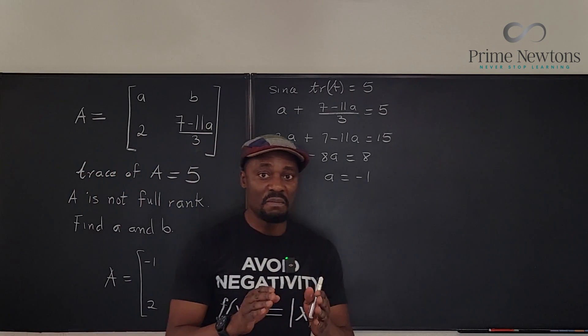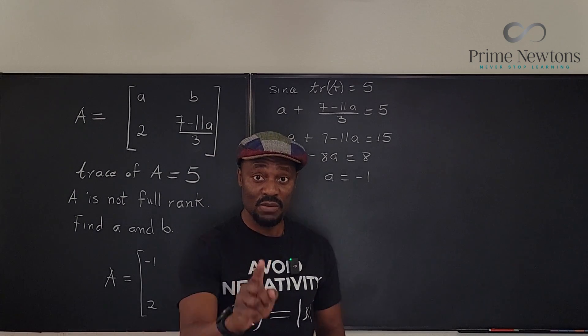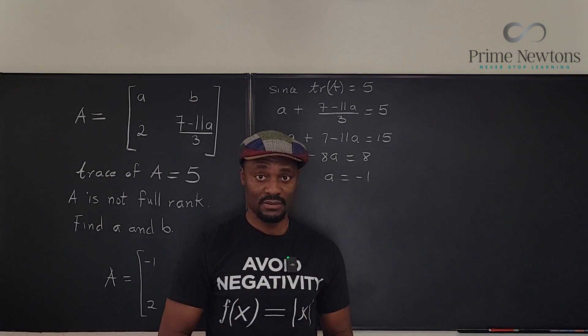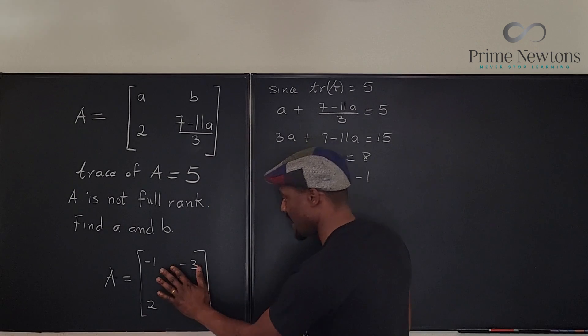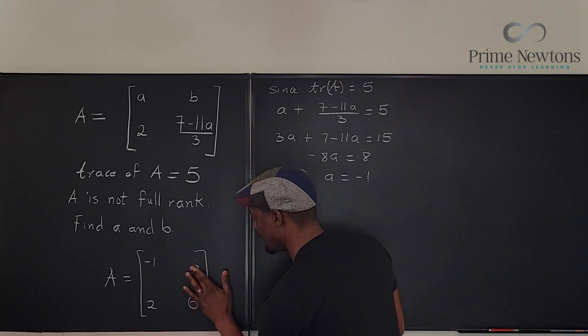That's just to show that it is not full rank. Or you can say if a matrix is not full rank, the determinant is equal to zero. And that's what you can use to predict where b is.